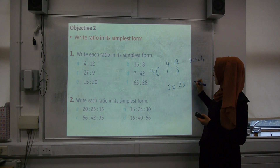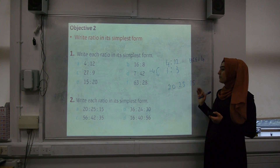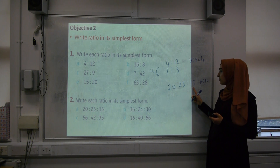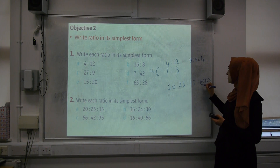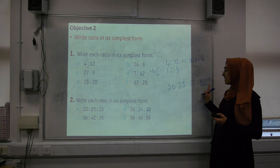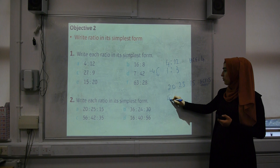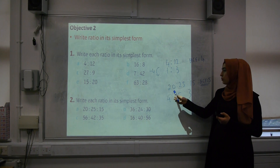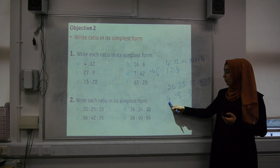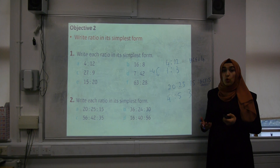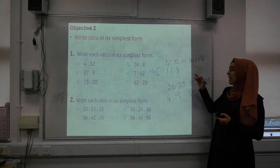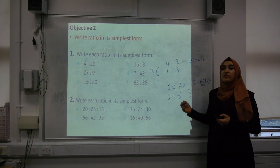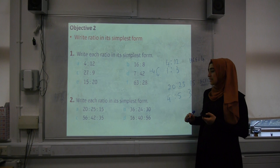For three quantities — for example 20 to 25 to 15 — the rule doesn't change. Find the HCF of all three numbers: the HCF of 20, 25, and 15 is 5. Divide each quantity by 5: 20 ÷ 5 = 4, 25 ÷ 5 = 5, and 15 ÷ 5 = 3. So 20 to 25 to 15 simplified is 4 to 5 to 3. Now pause the video and use the same approach to simplify the remaining ratios — answers will be reviewed in class.